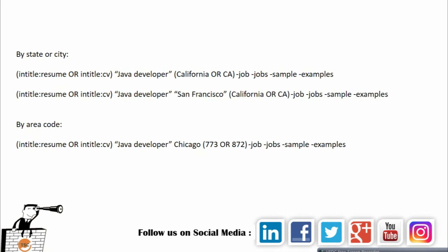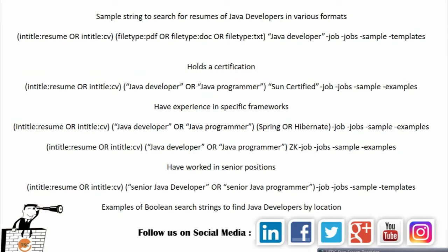You can also search for Java developers based on state and city. You can add California OR CA — CA being the abbreviation for California. You can also search by city by adding San Francisco in quotations, keeping California OR CA in the string. You can also find people by area code using intitle:resume OR intitle:CV with java developer and a city like Chicago, along with a zip code, removing jobs, samples, and examples.